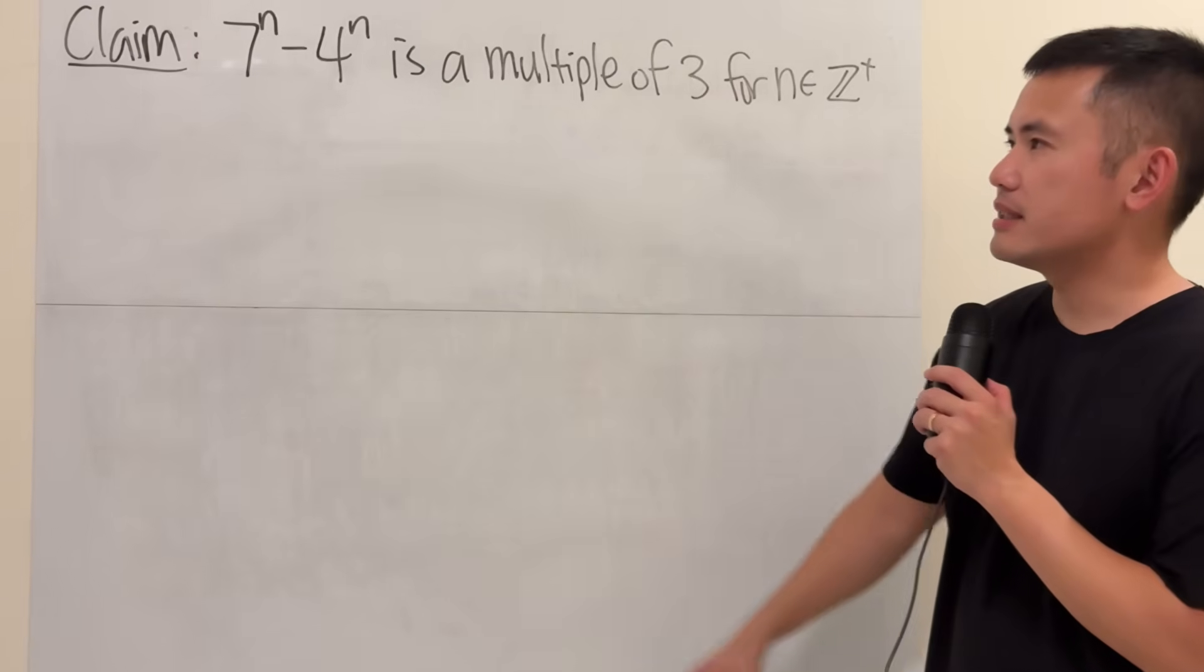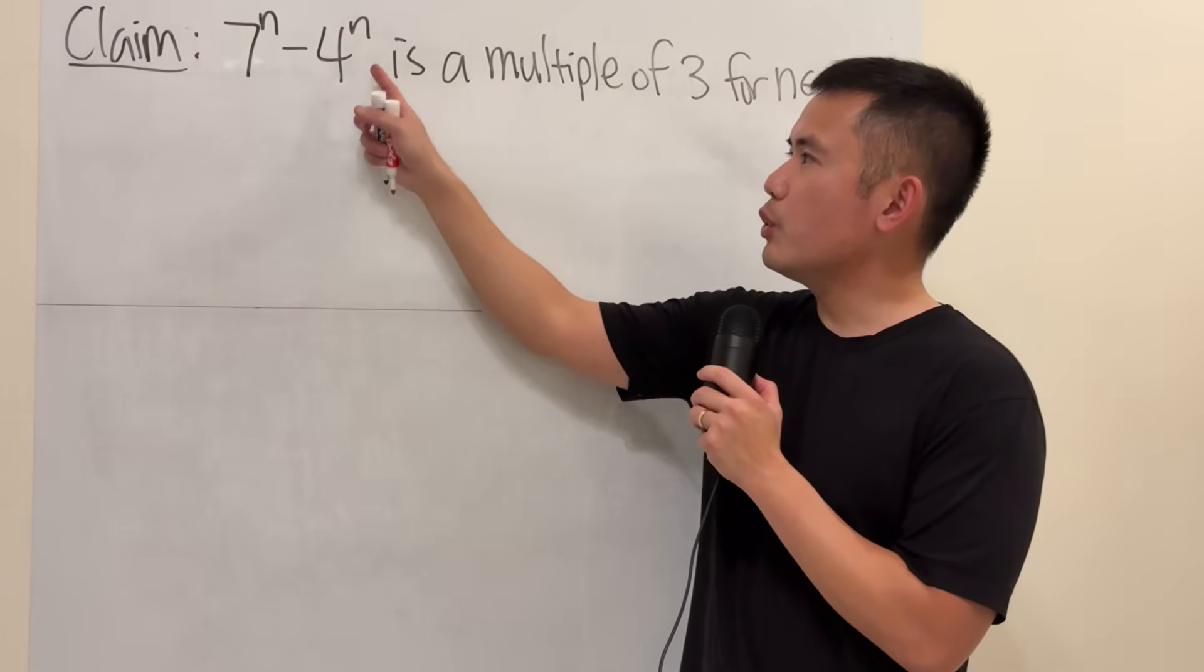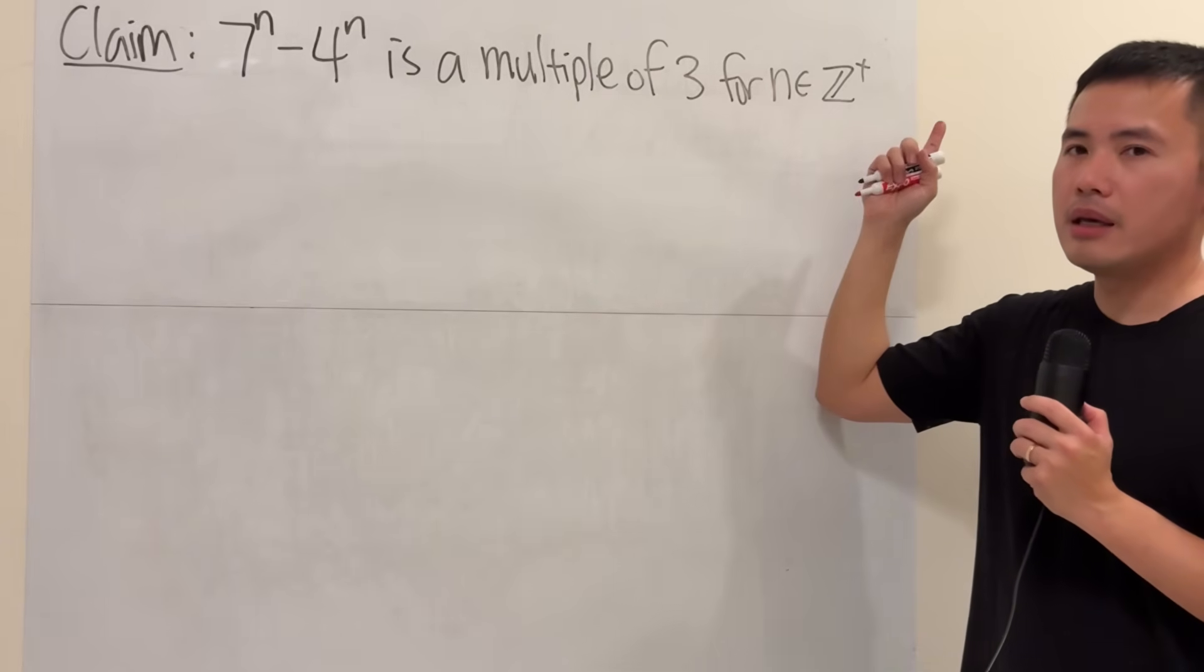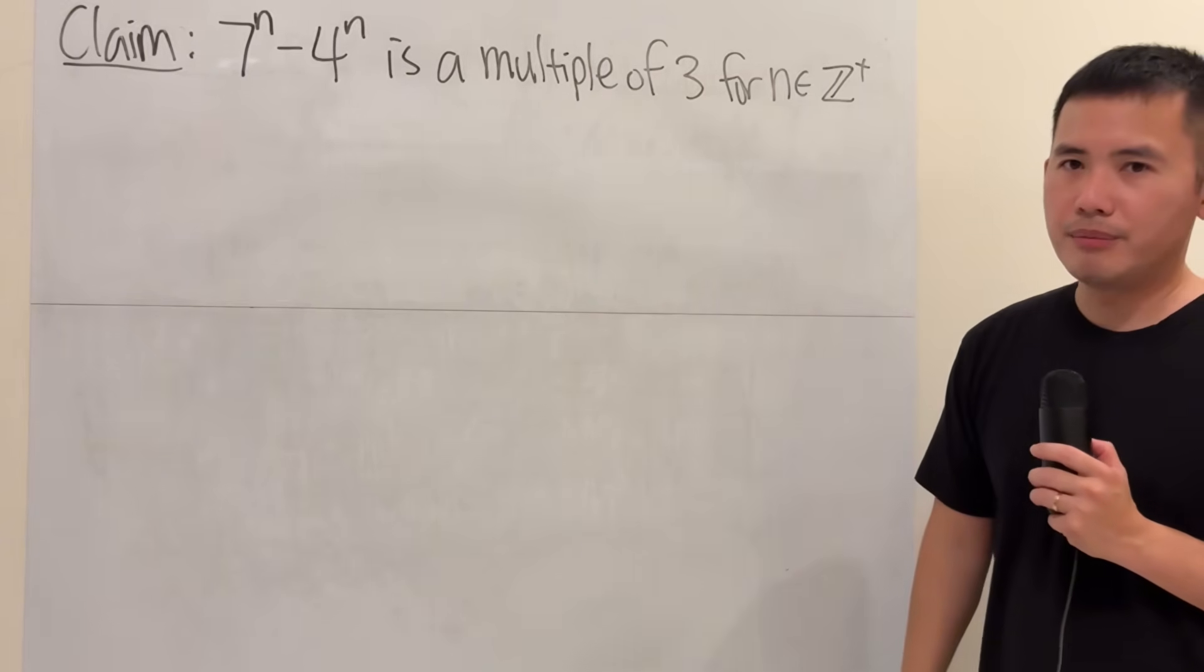Here's an interesting statement. It says, 7 to the n minus 4 to the n is a multiple of 3 for n being a positive integer.